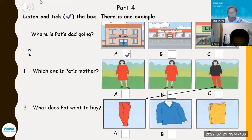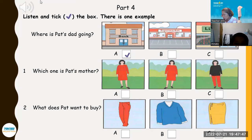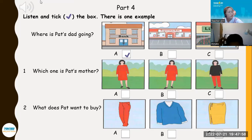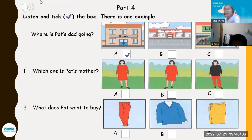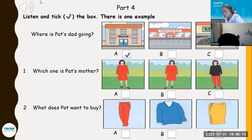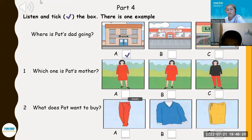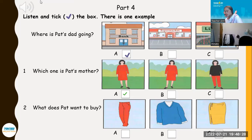One. Which one is Pat's mother? Is your mother here, Pat? Yes, she's in the garden with my aunts. Has your mother got straight hair? No, her hair is curly. Is she the one in the red dress? No, she's wearing trousers today. Two. What does Pat want to buy? Where are you going now, Pat? I'm going shopping. What do you want to buy? It's my birthday on Sunday and I want something new to wear at my party. Do you want some new trousers? No, I'd like a skirt, because my mum gave me a beautiful blue sweater.